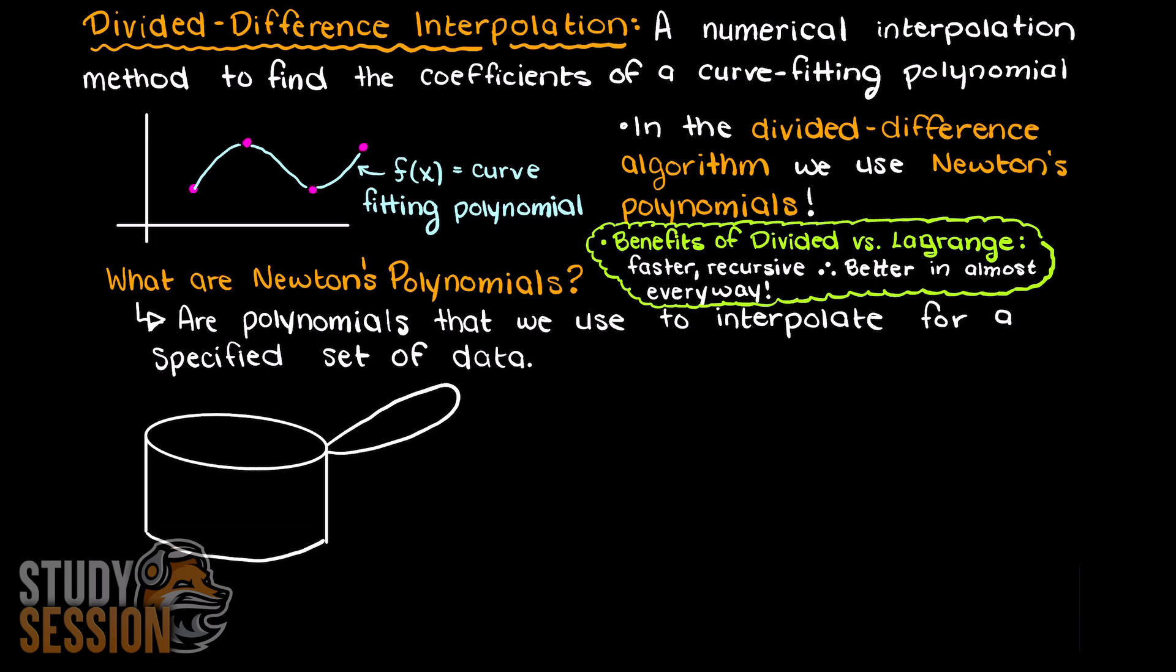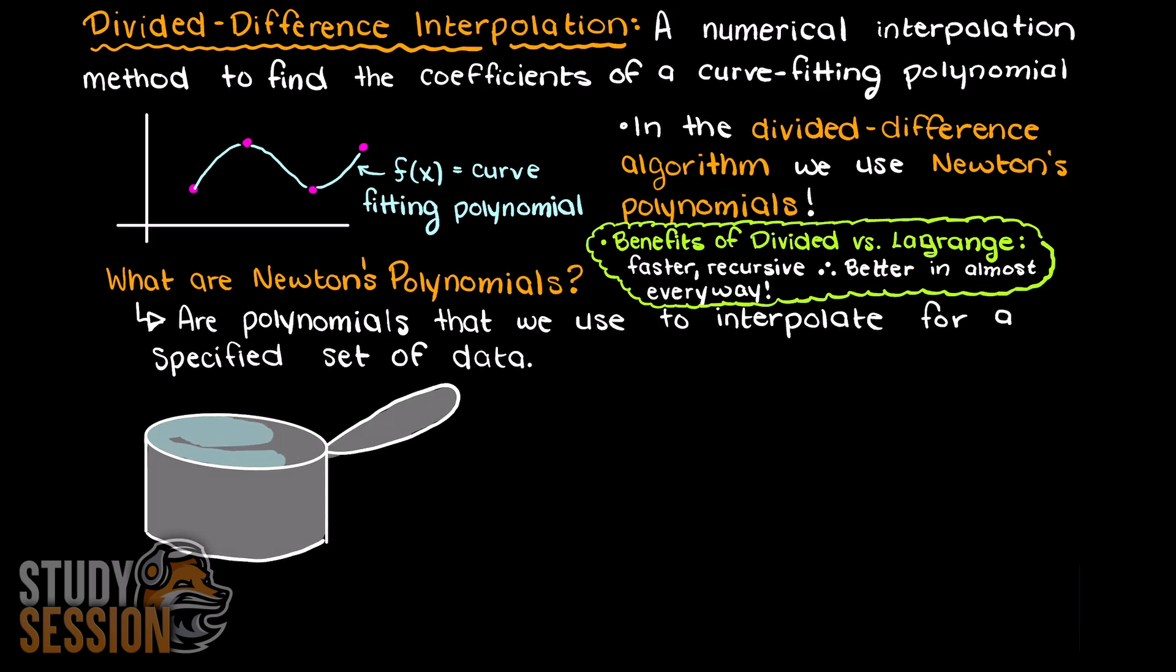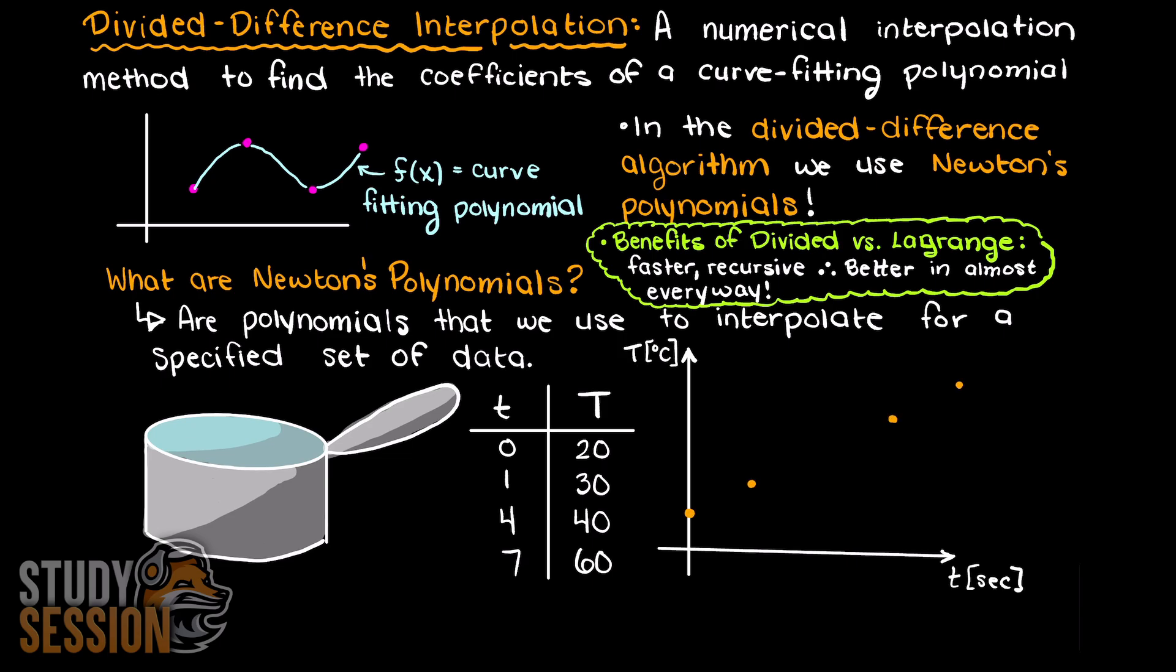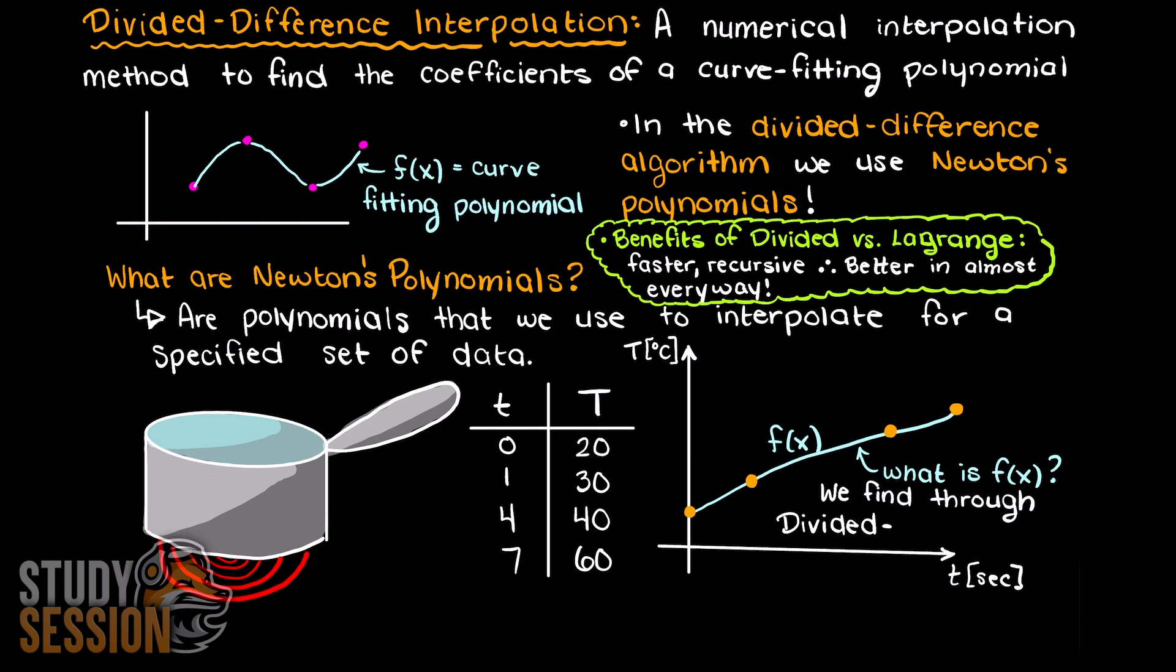Back to talking about the divided difference method, we can intuitively think of this through the following example. Let's imagine that we have a pot of water being heated slowly on a stove where we are tracking the temperature increase of the water at different points in time, and this gives us the following discrete data points. Graphically, this data set will look something like this. Then, we are going to use the divided difference algorithm to find a continuous function using Newton's polynomials that pass through all of the points like this.